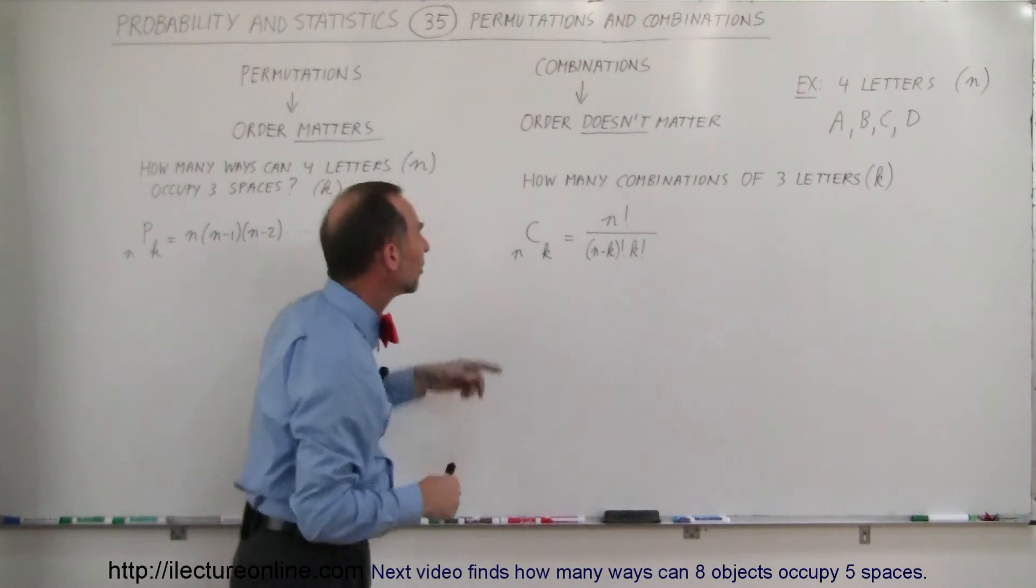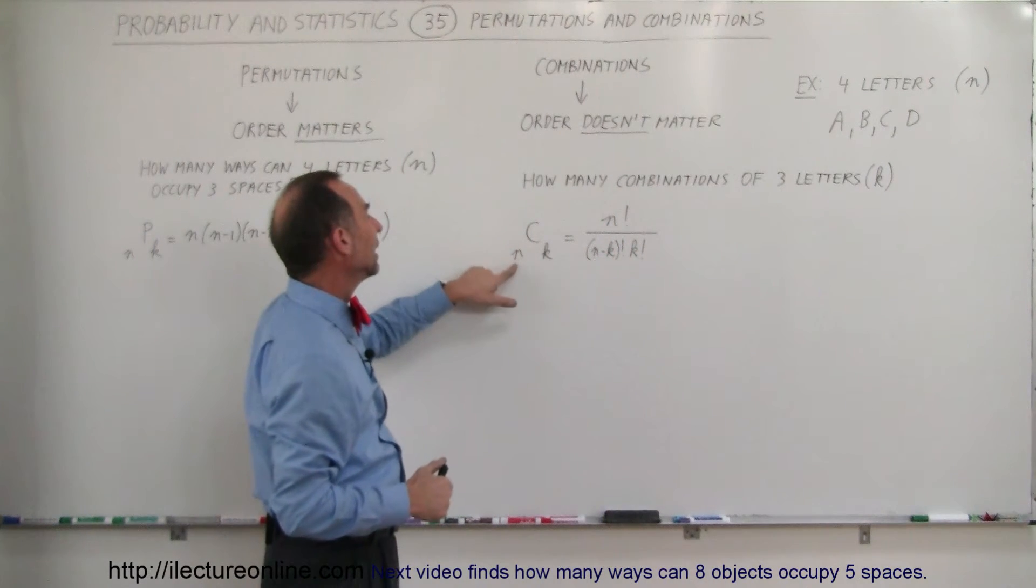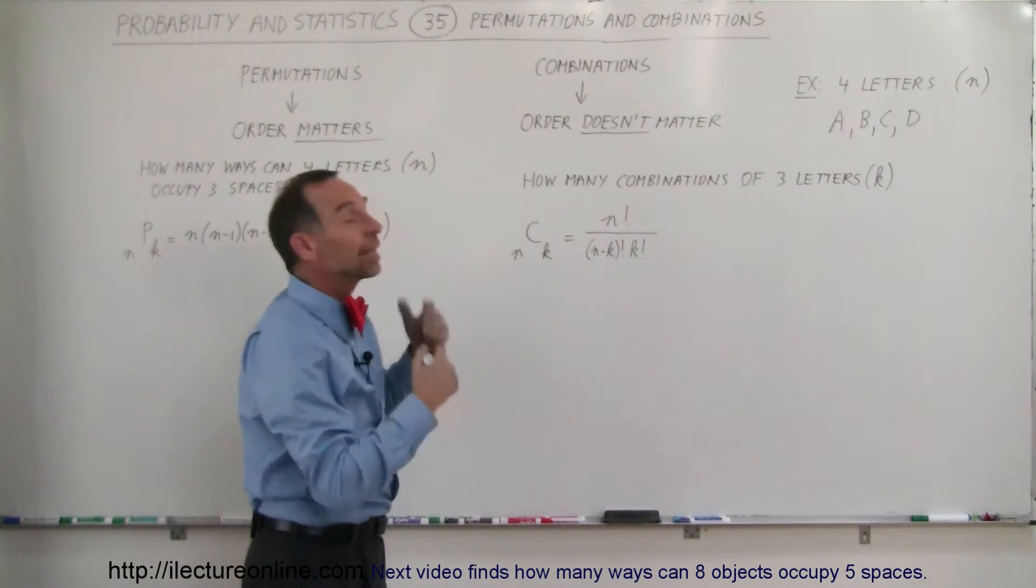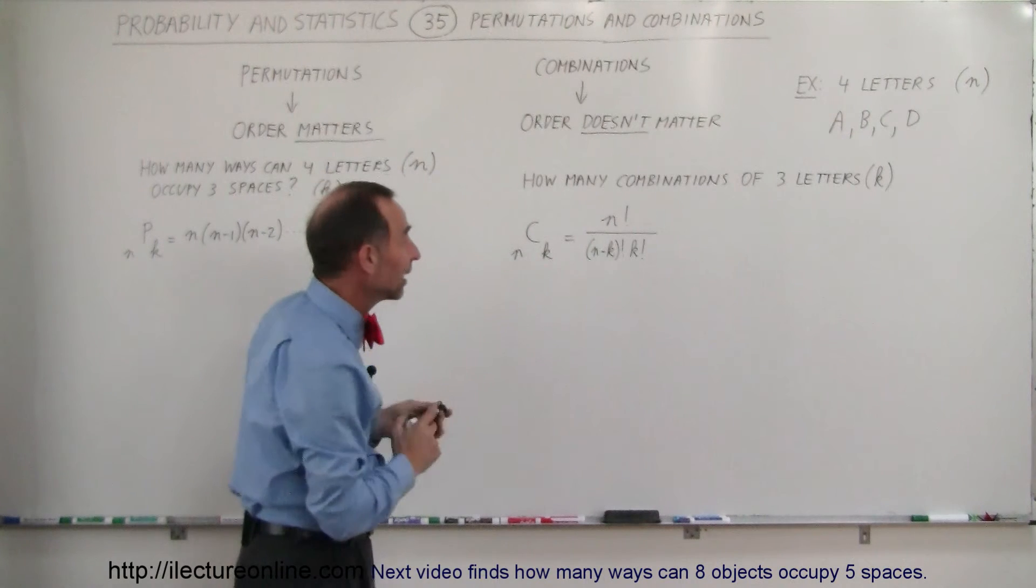The way we work that out is that it's the combination with N letters, K combinations, or how many combinations with three letters? So, I should say that again.